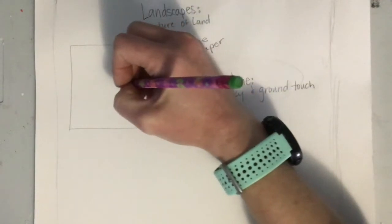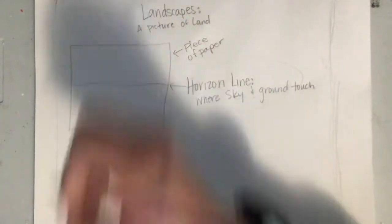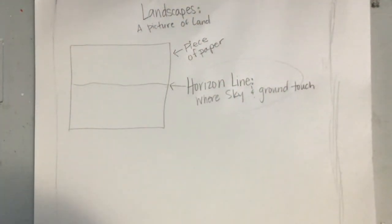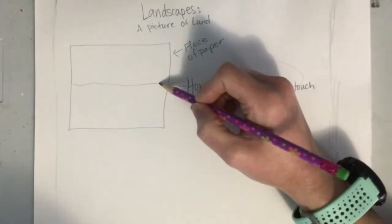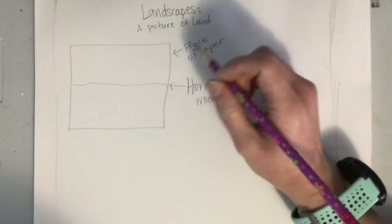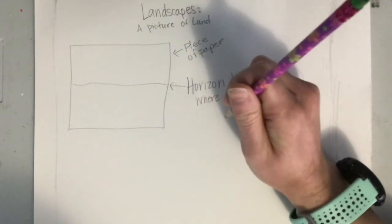In about the middle of my paper — because that's usually where the sky and the ground touch — I'm going to draw a line just from side to side. It doesn't have to be a perfect line and it should be a light line because I might erase some parts of it.